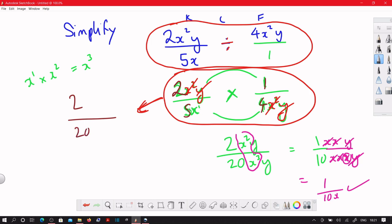The only letter, the only thing that has not been cancelled on the denominator is this x over here. That's easy to simplify. 2 over 20 we know is 1 over 10 and we've got the x at the bottom. This is the same as that.